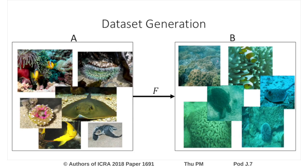To alleviate this issue, we use a recently proposed image-to-image translation method called CycleGAN to generate a dataset. CycleGAN is able to perform domain transfer without paired images. We select non-distorted underwater images from ImageNet, as seen on the left, and use CycleGAN to distort them in order for them to appear as if they came from the set of distorted underwater images, as seen on the right.